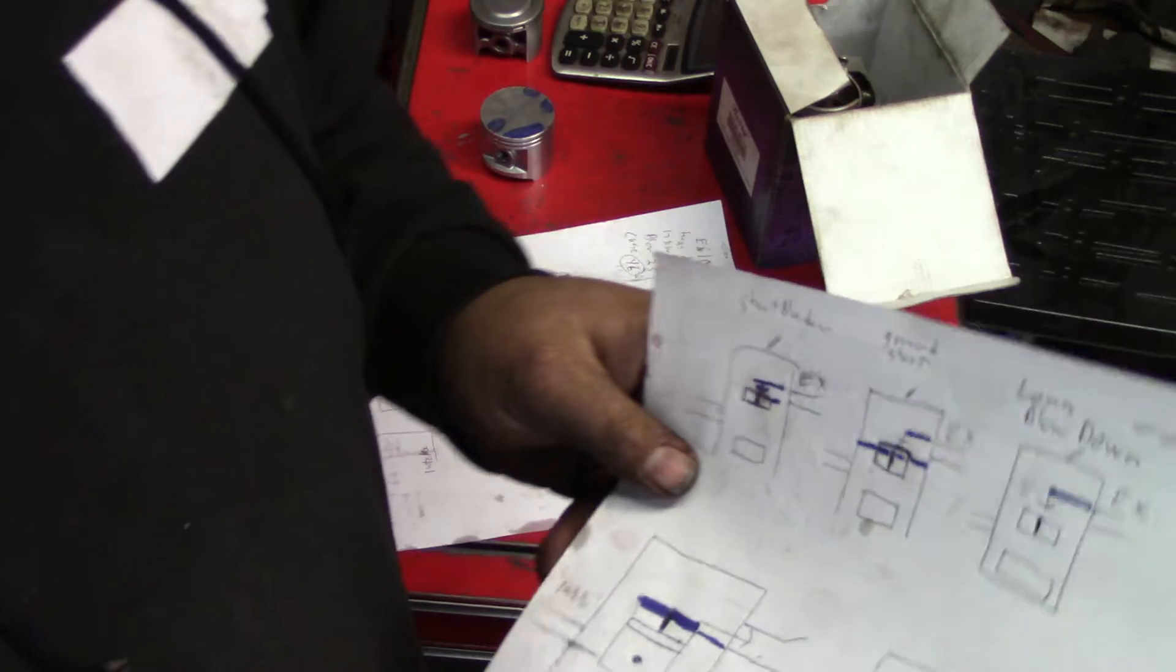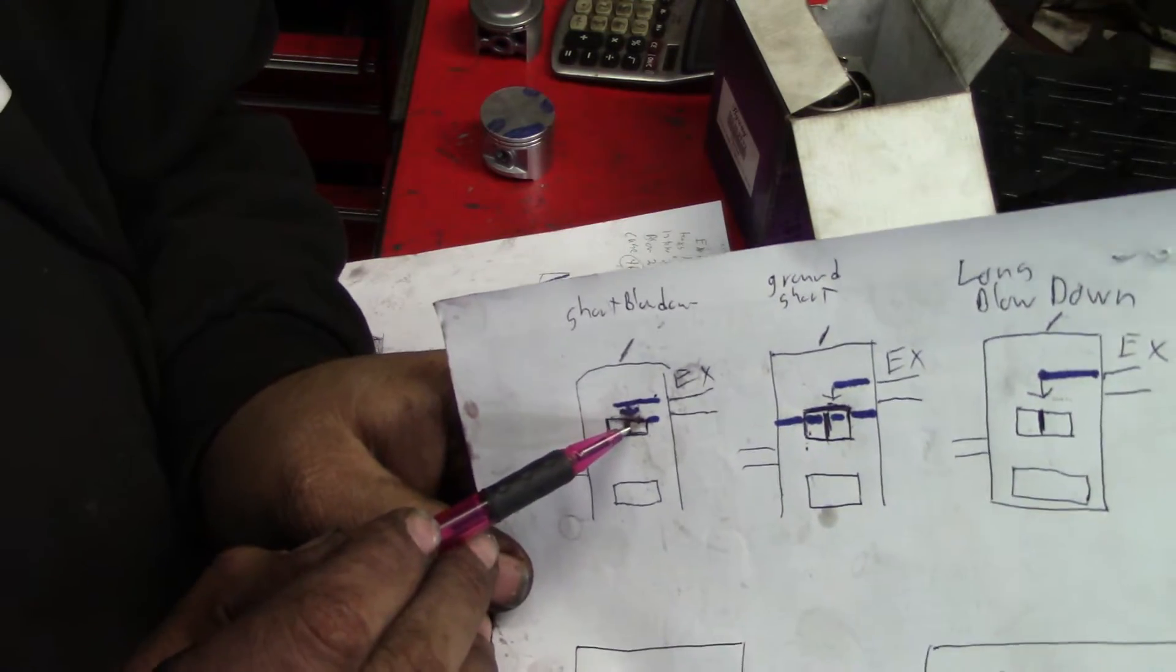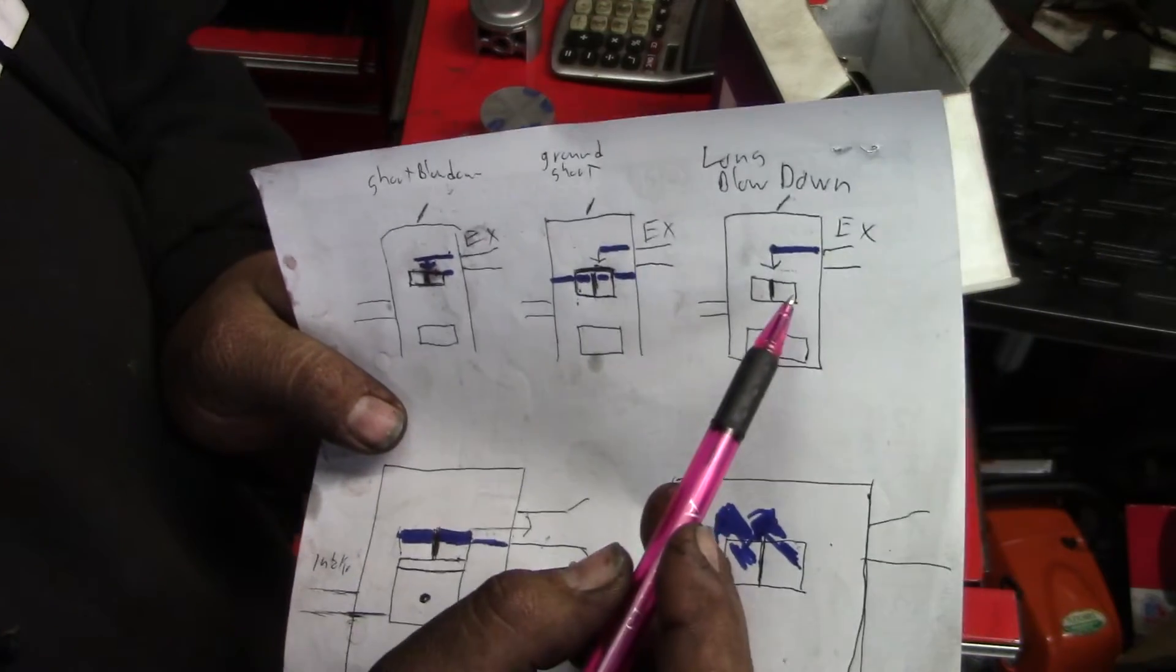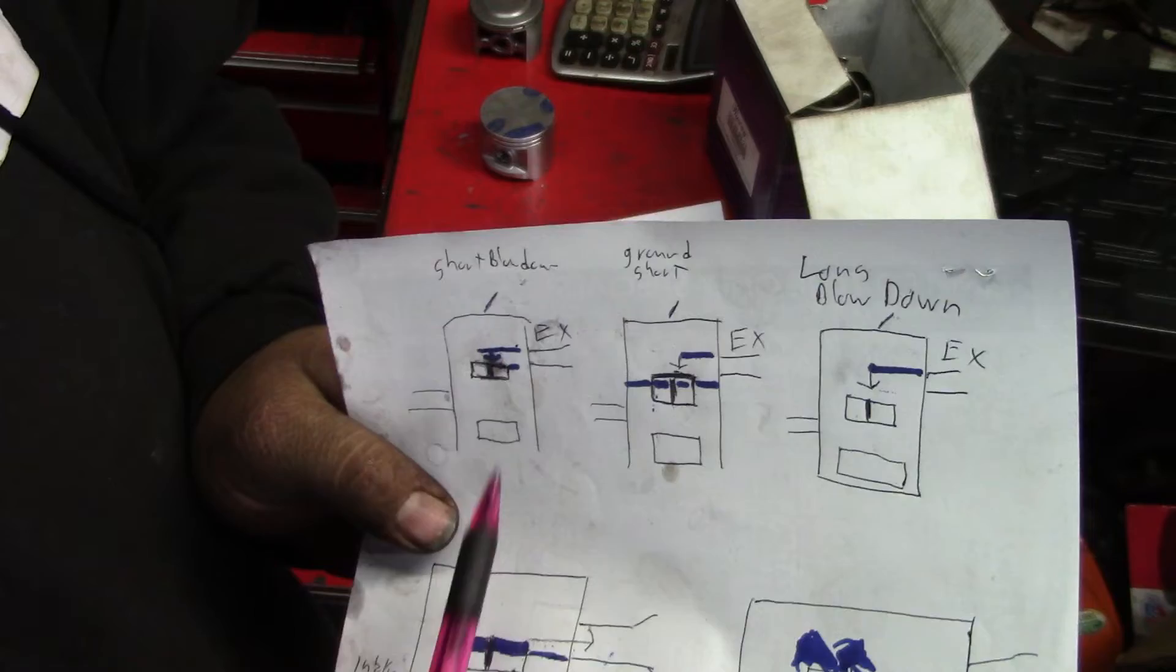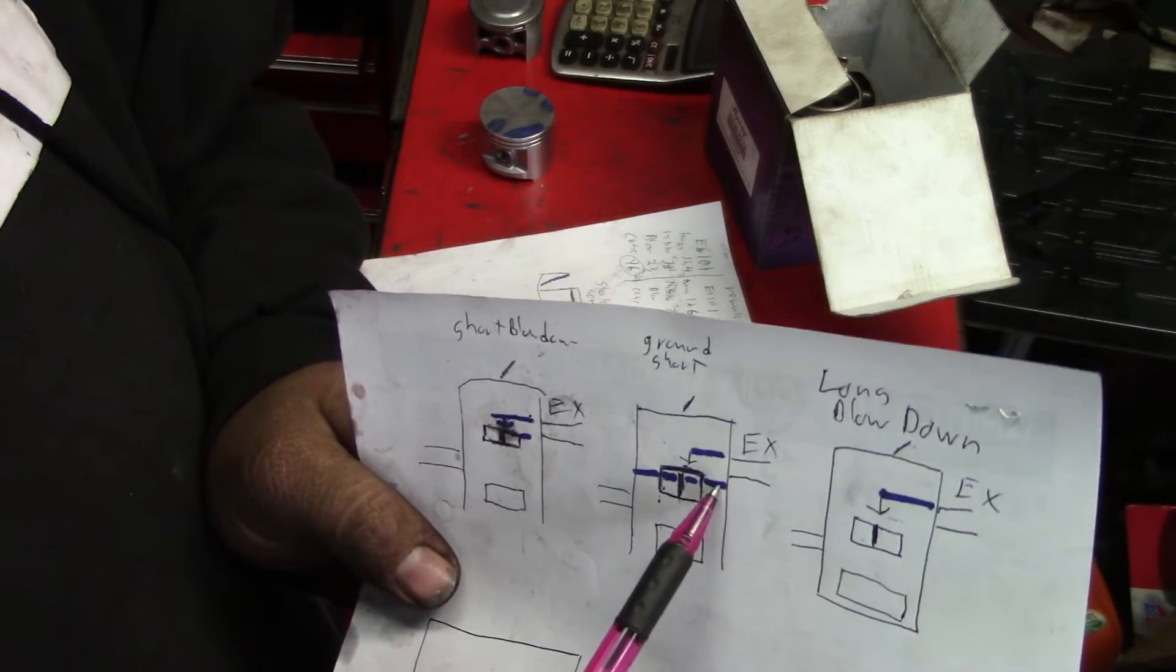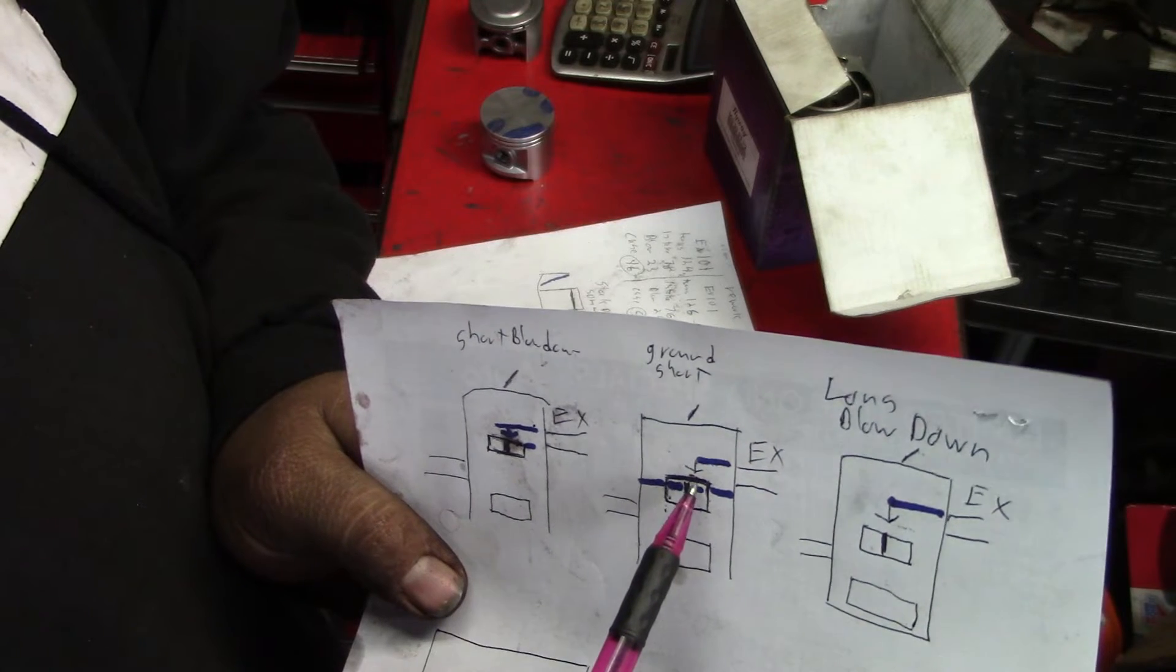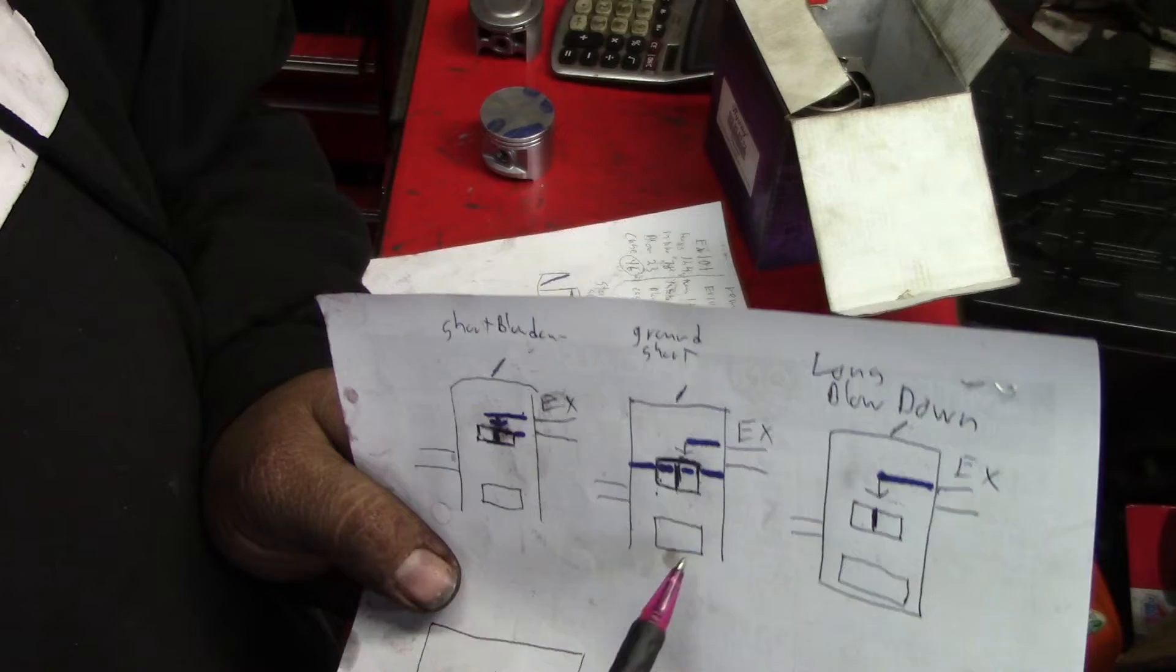Now this is short blow down here. The distance between the top of your transfers to the top of your exhaust, look at how short that is. Over here, long blow down - distance between here to here. See how long that is versus this. That blue mark is where you grind from long blow down to make short blow down. So you lost the amount of time that piston comes down to compress your crankcase.